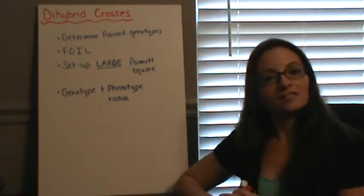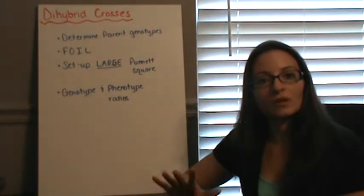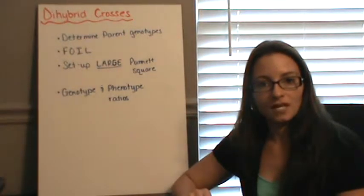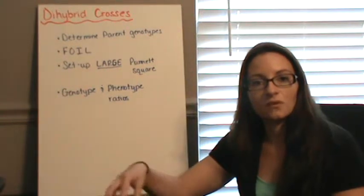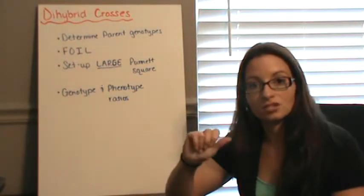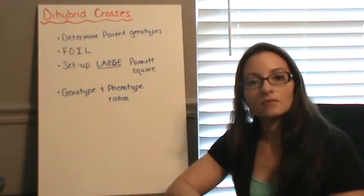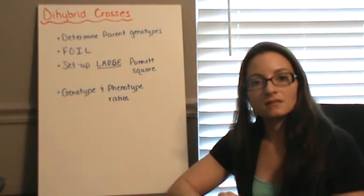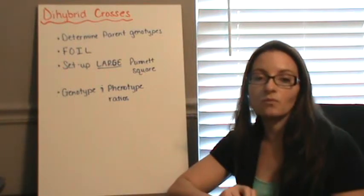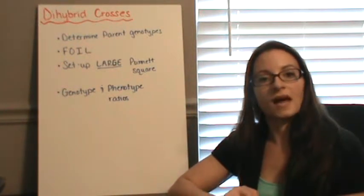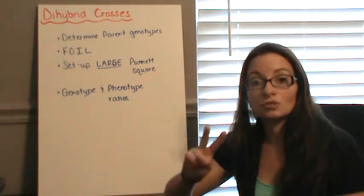Welcome. Now that we've discussed monohybrid crosses — a cross between one parent's gene with another parent's gene, one gene — we're going to look at dihybrid crosses. Dihybrid crosses take two different genes and cross them for the parents. And what is the probability of the offspring having different combinations of each of those two different genes?